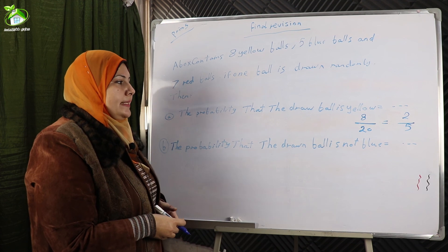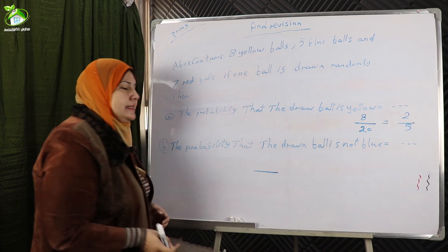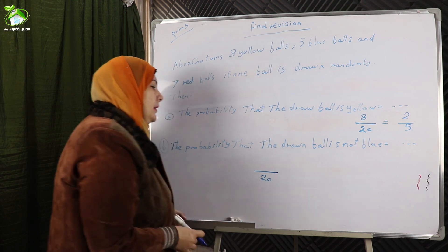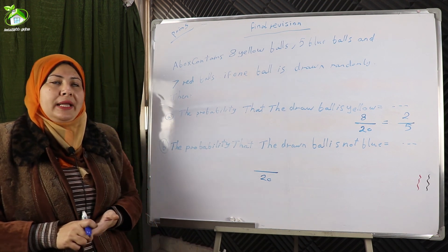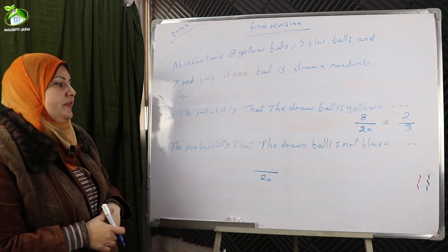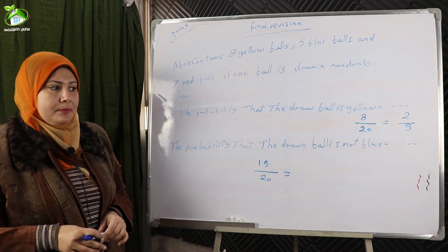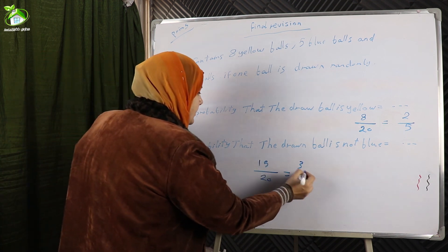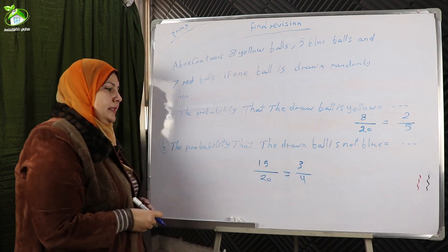The probability that the drawn ball is not blue. The denominator is still 20. Not blue means the ball is yellow or red: 8 plus 7 equals 15. So the probability is 15 over 20. Simplified by dividing by 5: fifteen divided by five equals three, twenty divided by five equals four. So the probability equals three-quarters.